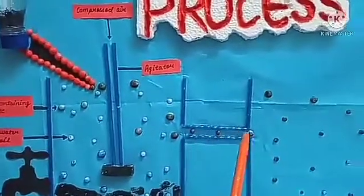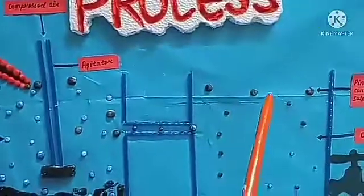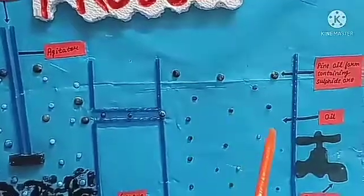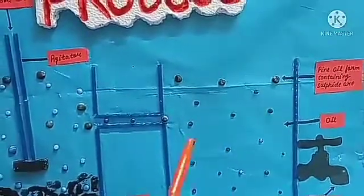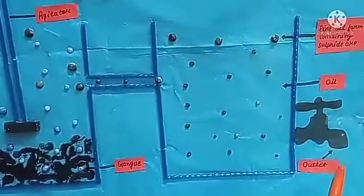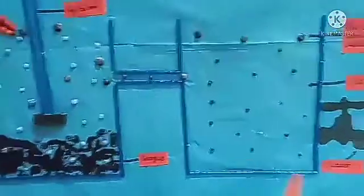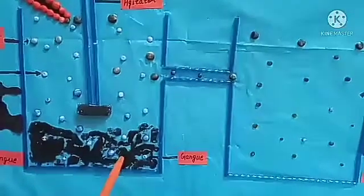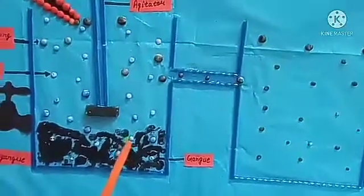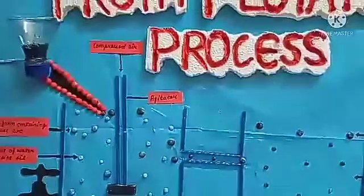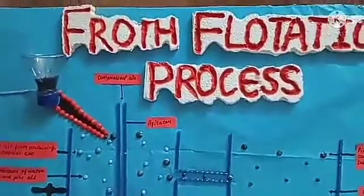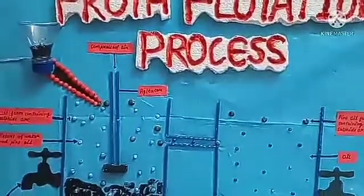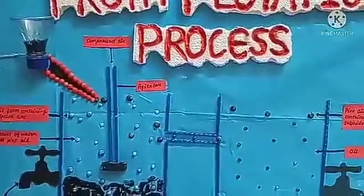This blue ball is a mixture of water and pine oil, and this black ball is coming to the next container. This black ball is also called the pine oil froth containing sulfide ore. This beaker is filled with oil, and this outlet is used for removing the impurities. This black portion is impurities, also known as gangue.